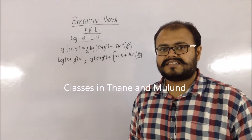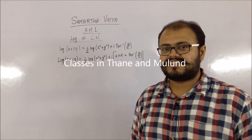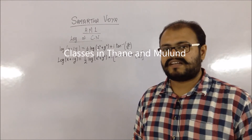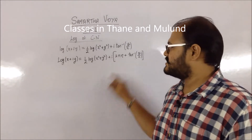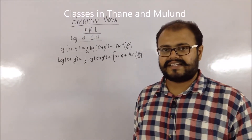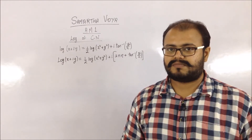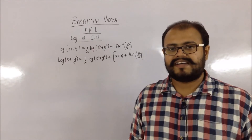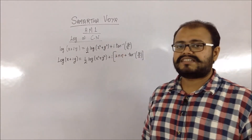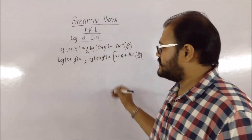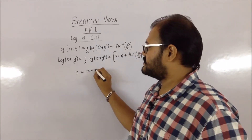The first formula gives the principal value and the second formula gives the generalized value. In the question, they will mention what type of value you need to find; if it is not mentioned, generally the principal value is found. The only difference between the two equations is the term 2πn.